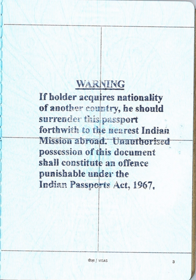Renunciation is covered in Section 8 of the Citizenship Act 1955. If an adult makes a declaration of renunciation of Indian citizenship, he or she loses Indian citizenship. In addition, any minor child of that person also loses Indian citizenship from the date of renunciation. When the child reaches the age of 18, he or she has the right to have his or her Indian citizenship restored. The provisions for making a declaration of renunciation require that the person be of full age and capacity. Termination is covered in Section 9 of the Citizenship Act 1955, and the provisions for termination are separate and distinct from the provisions for making a declaration of renunciation.